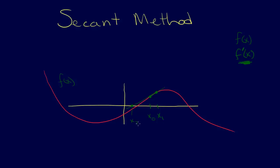That intersection point becomes x2. Then we use x2 and x1 as our two points in the next step. We evaluate the function at x2 and x1, use those as our next approximation, find the derivative there, and find where it intersects the x-axis — that becomes x3. Then we use x2 and x3 as the next pair, and as you can see, this converges very quickly to the root.